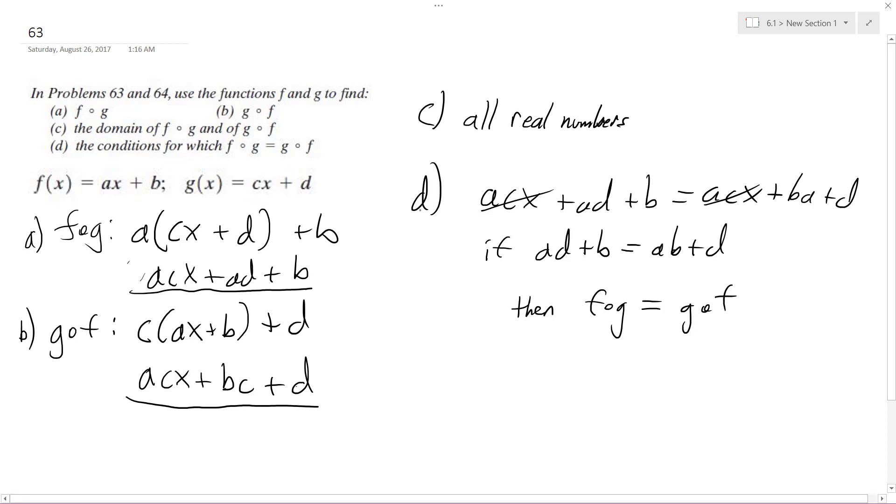On what conditions are f of g and g of f equal to each other? I set them both equal to each other, and then I canceled out the acx terms, because those are the two terms that are the same in both, and then I had ad plus b equals ab plus d.